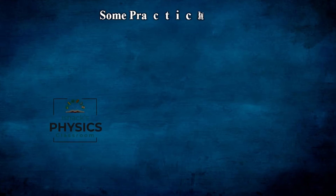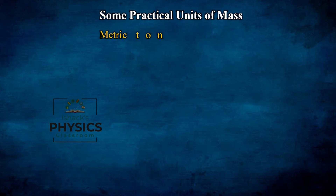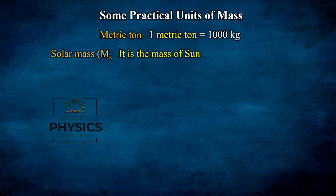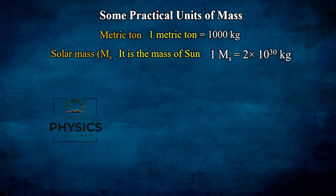Next are practical units of mass. First is the metric ton: 1 metric ton equals 1000 kilograms. Second is solar mass (M☉), which is the mass of the Sun: 1 M☉ equals 2 × 10³⁰ kilograms. The Sun contributes 99.9% of the total mass of the solar system, so the mass of the solar system is approximately 2 × 10³⁰ kilograms.